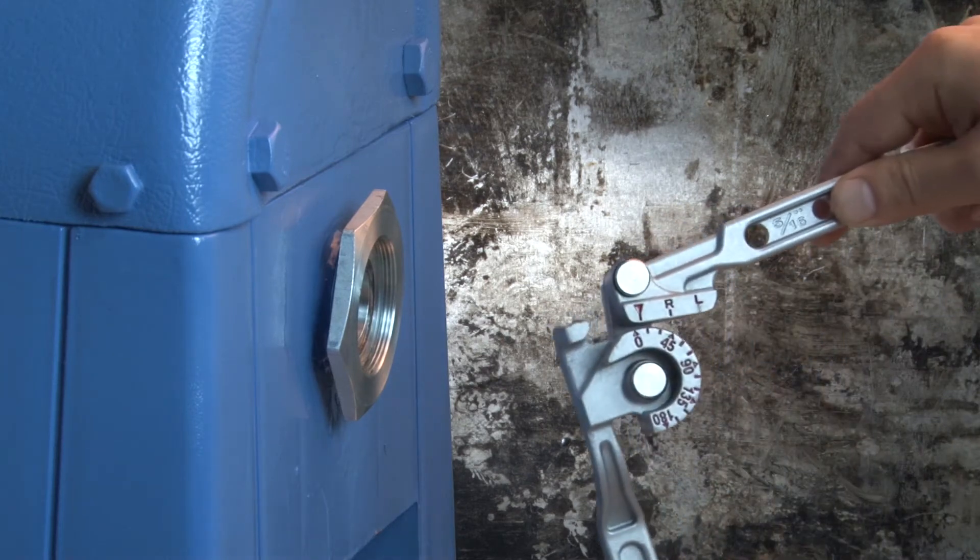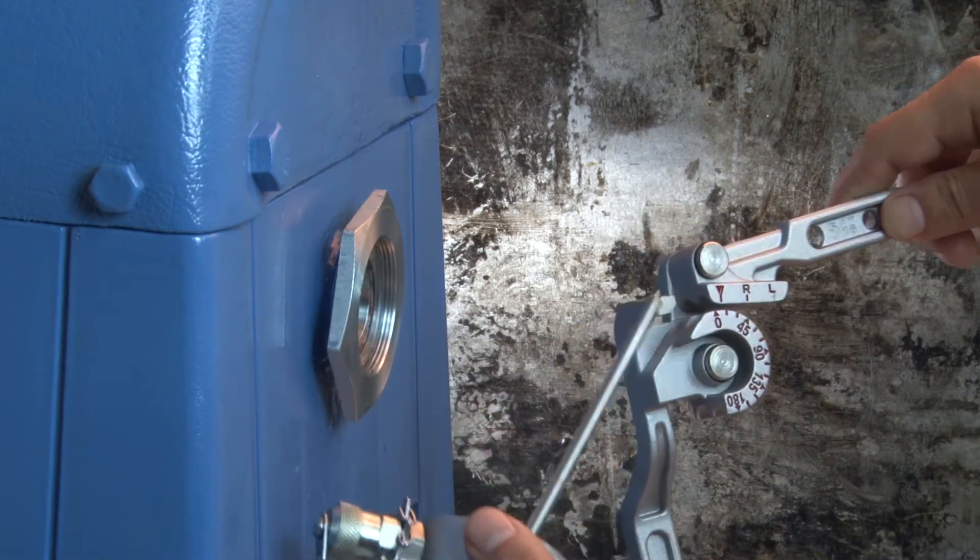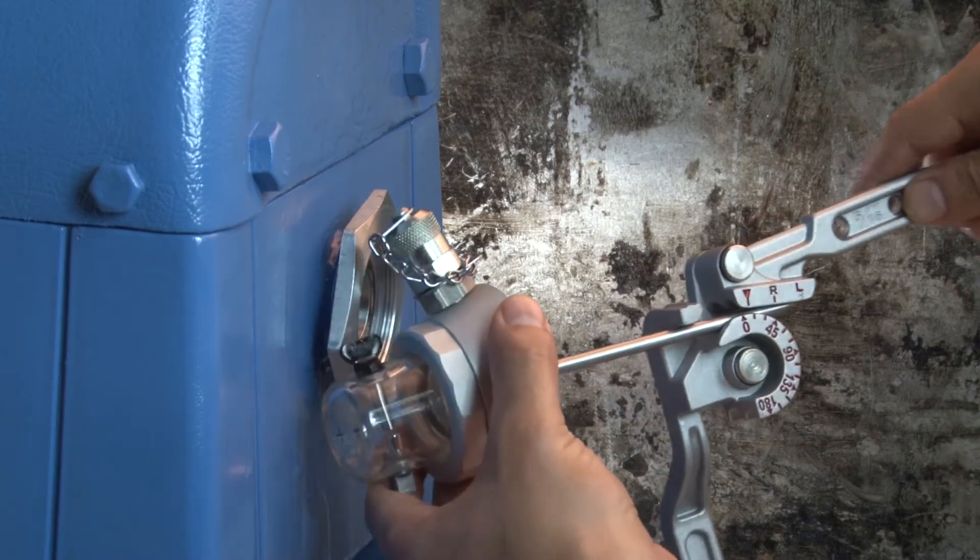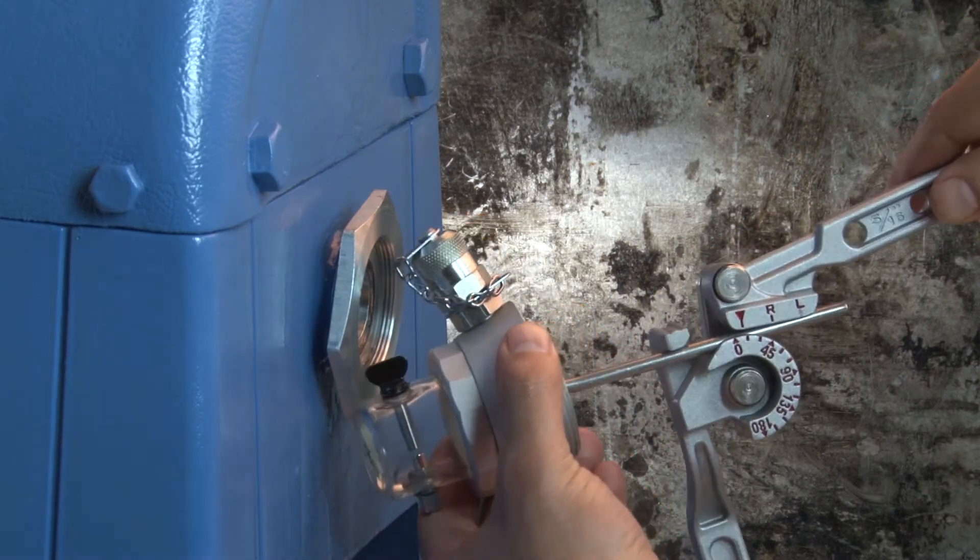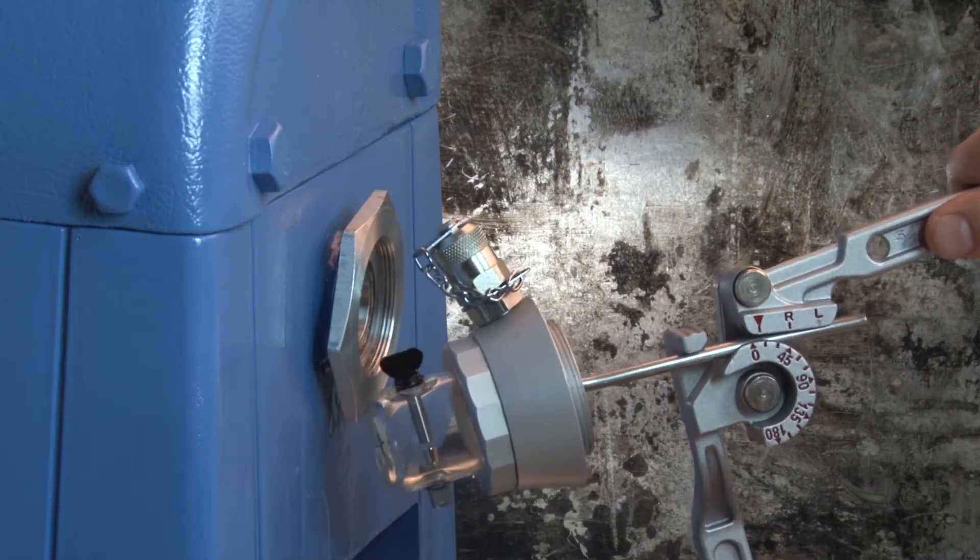Using the appropriate pipe bender, bend the pilot tube in the direction noted in the previous step. Choose a bend location and angle that place the pilot tube's tip within the machine and below the oil level for proper sampling.